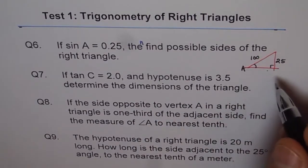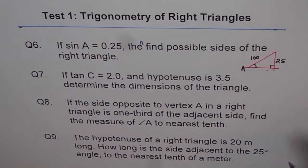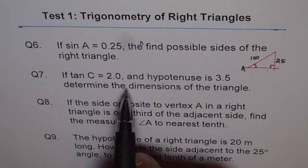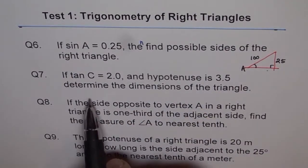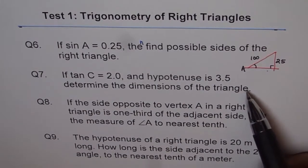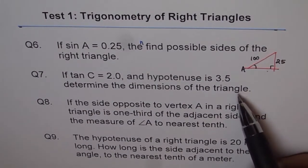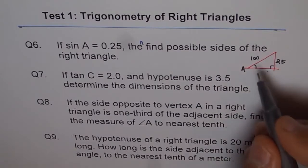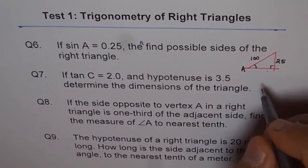If tan C equals 2.0 and hypotenuse is 3.5, determine the dimensions of the triangle. Now this triangle is a very specific one because we have given you the hypotenuse. It is not a general triangle as was in question 6.